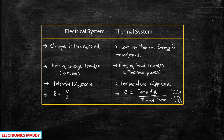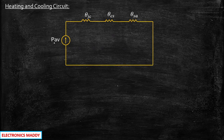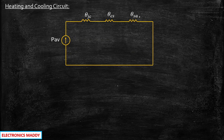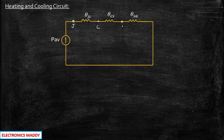Now we will take a look at the heating and cooling circuit of SCR and how it looks. P_AV is the thermal power in this circuit. We have thermal power, and we have theta_JC, theta_CS, and theta_SA, which are thermal resistances. Instead of resistors, we have thermal resistances here. The nodes are labeled J (junction), C (casing), S (heat sink), and A (ambient).